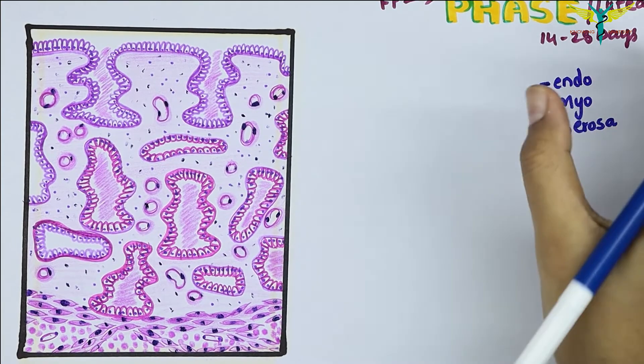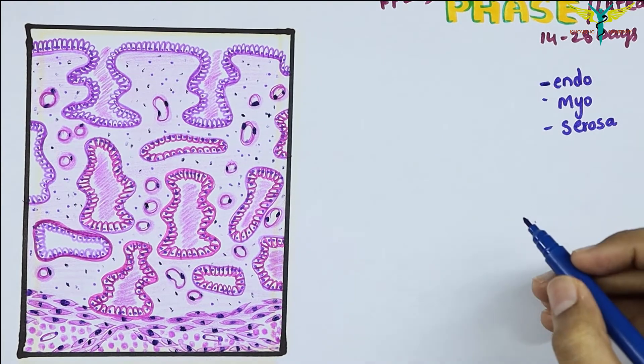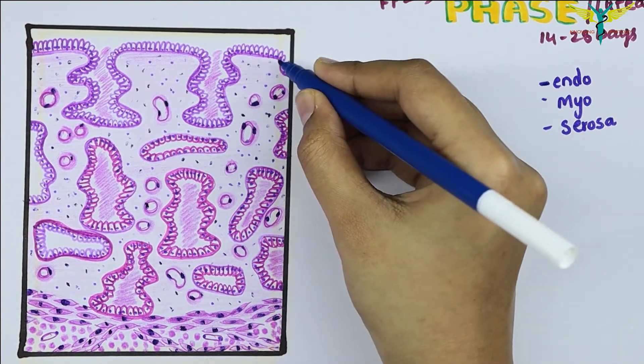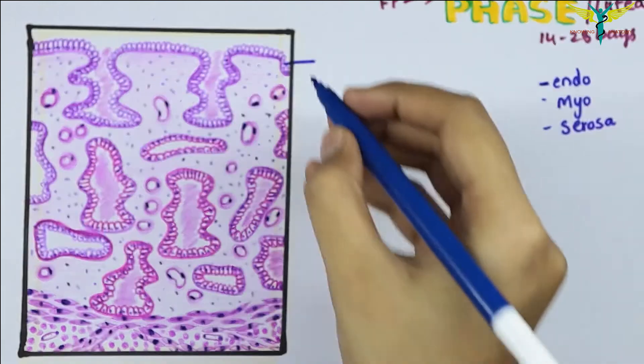The thickness of this endometrium or the mucosal membrane is very much increased in this secretory phase. This is the lining epithelium, which is the columnar epithelium.